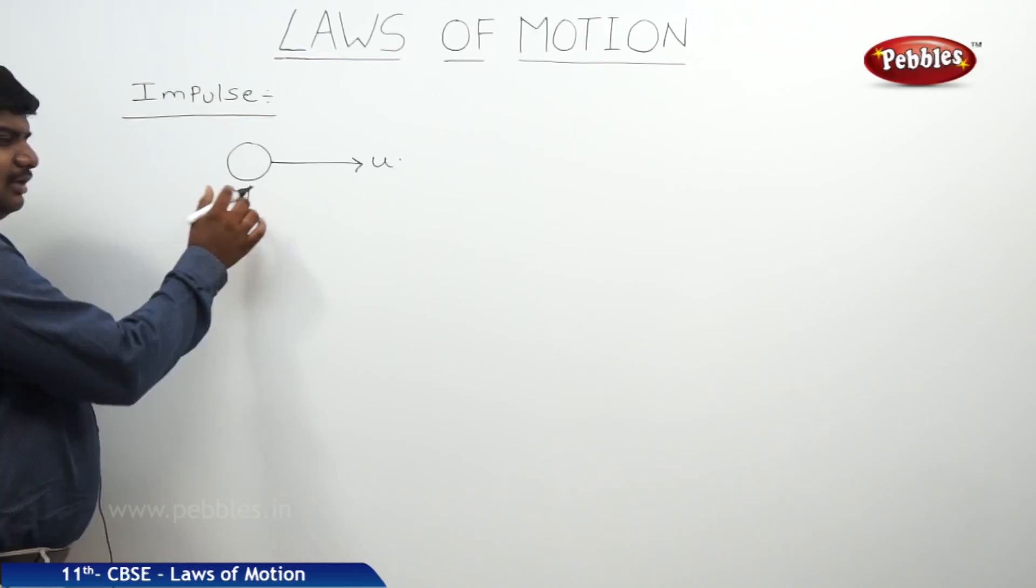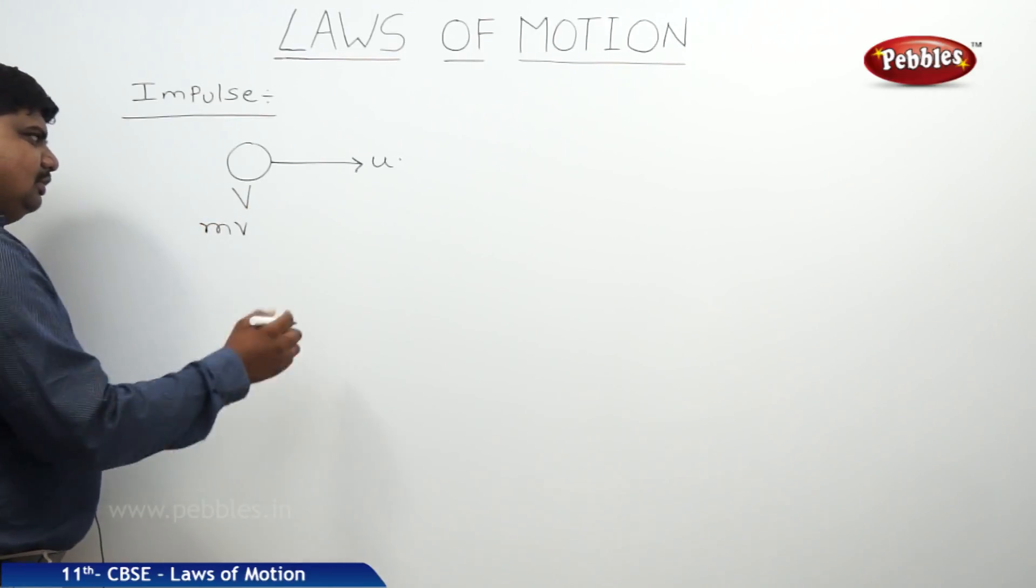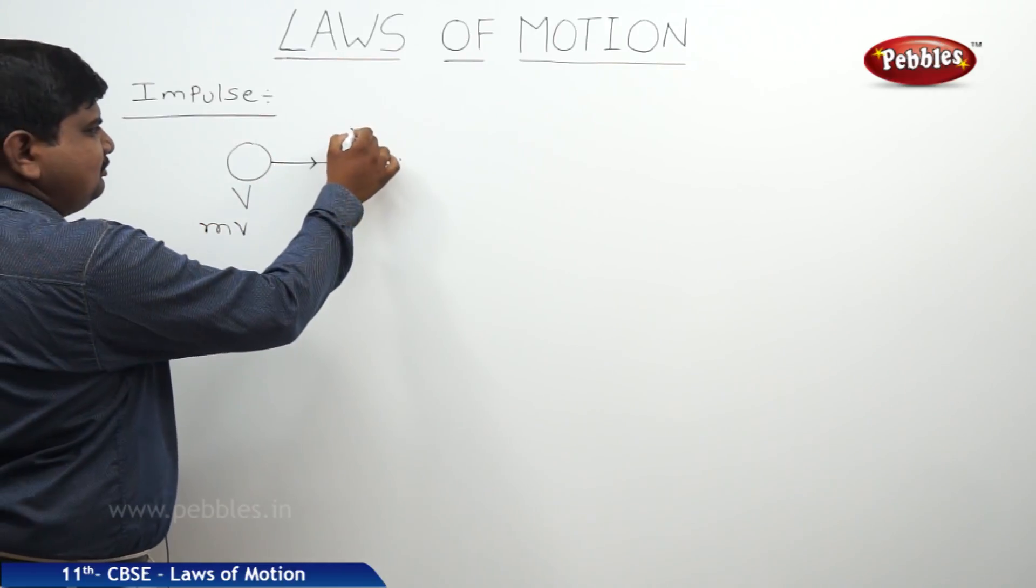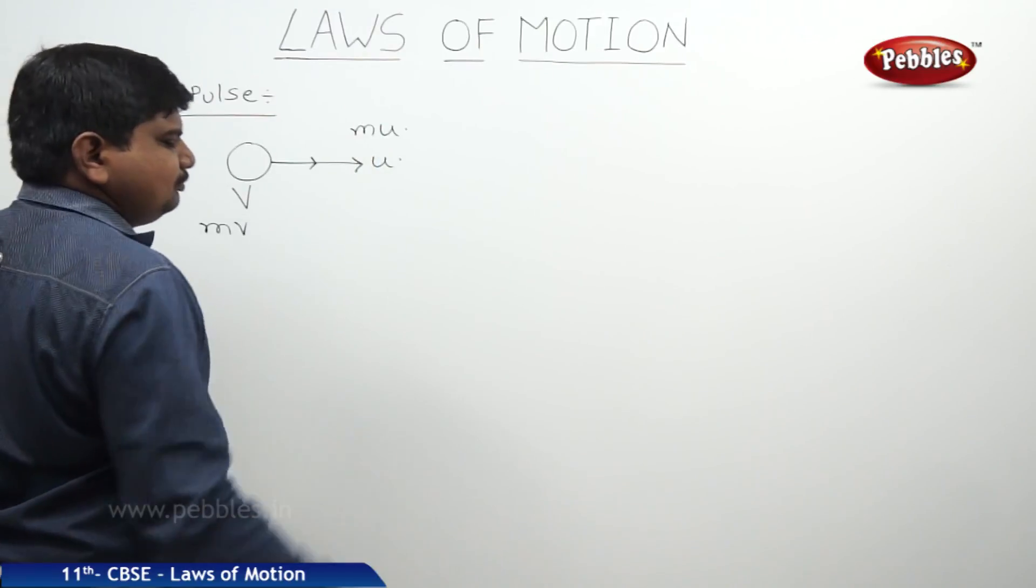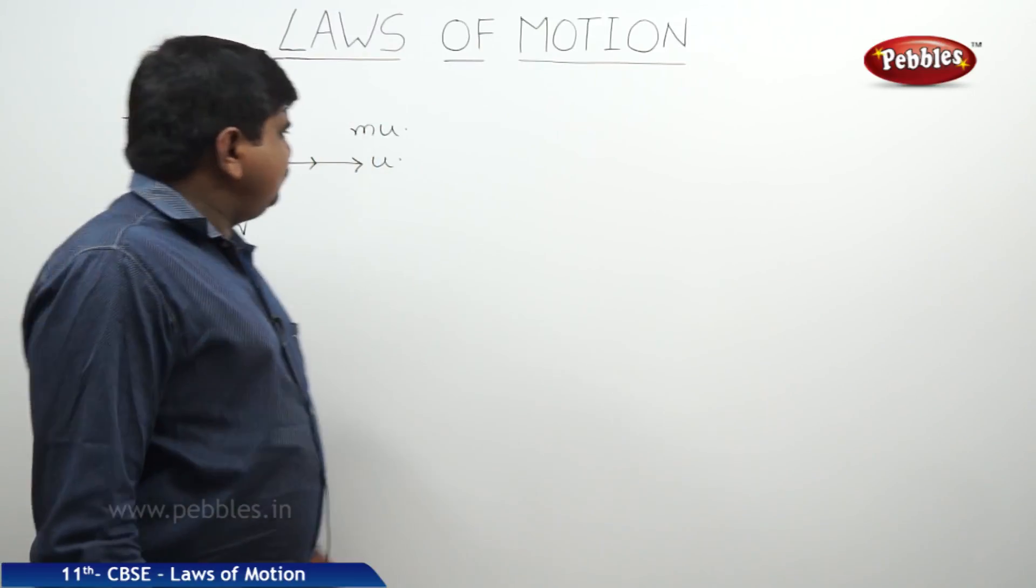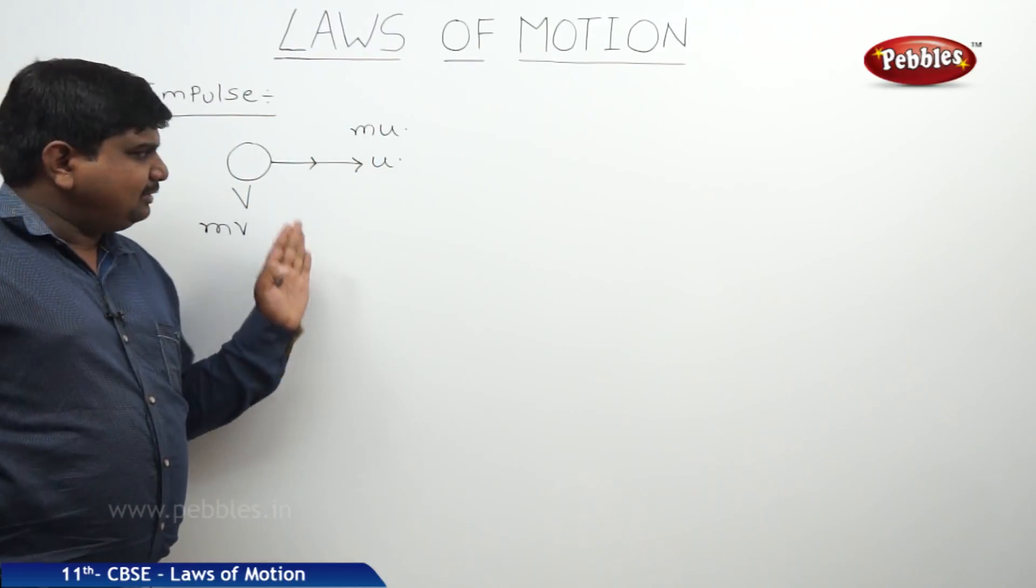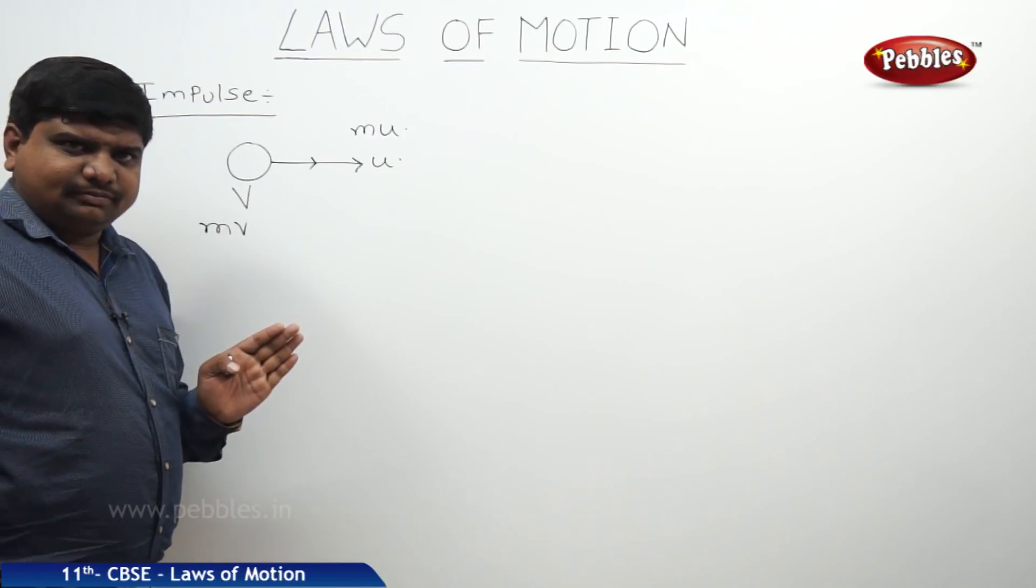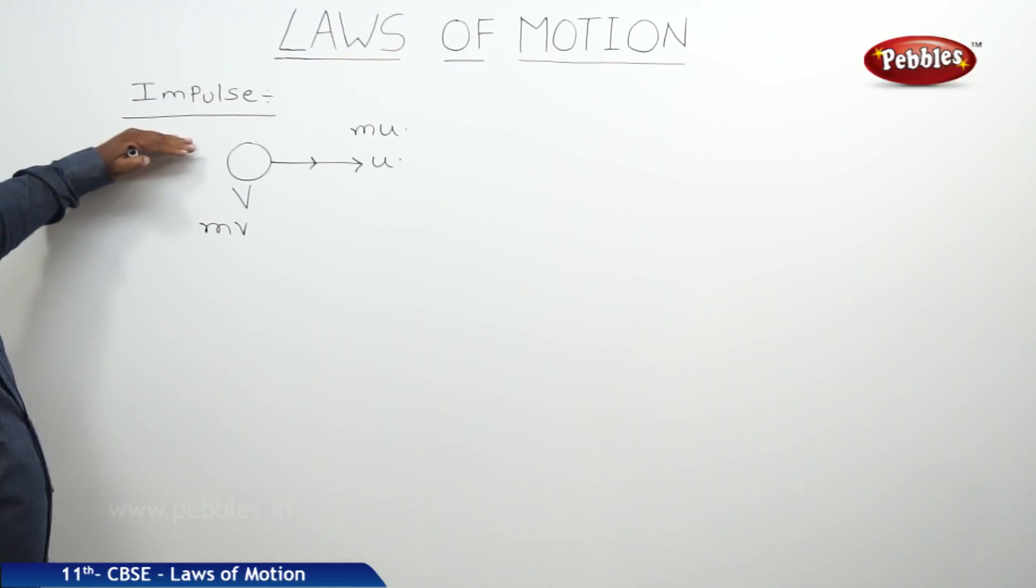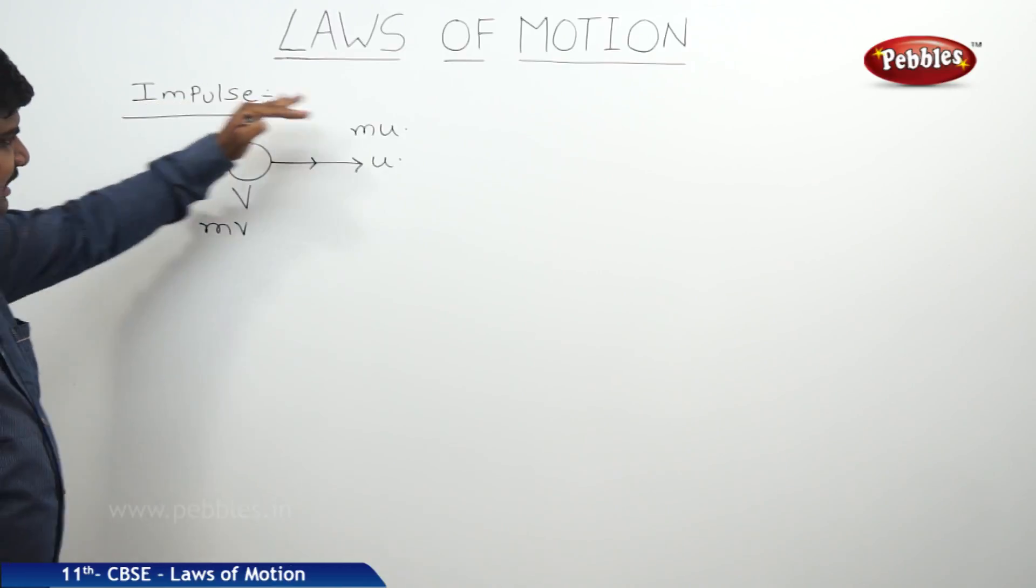The initial momentum of the body is MV. After the force is applied, its momentum was changed to MU. We know that the rate of change in momentum is force, but what is the connectivity between this impulse and this explanation?